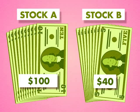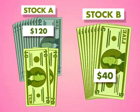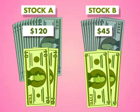After one year, Stock A earns $20, so the account now holds $120. Stock B earns $10 and now holds $50.